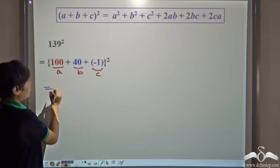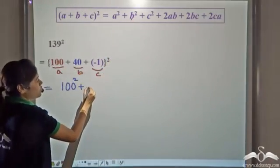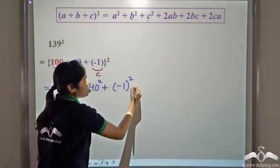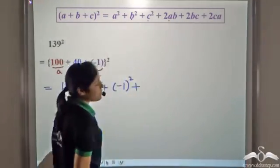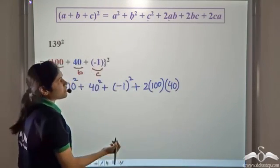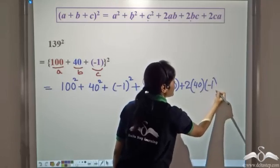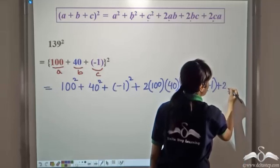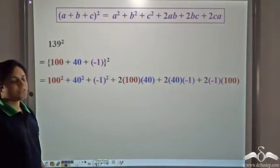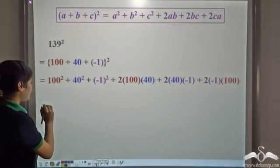So when we expand it, we have a² so we write 100², b² so we write 40², c² so we write (negative 1)², then 2ab so we write 2 times 100 times 40, then 2bc so we write 2 times 40 times negative 1, and 2ca so we write 2 times negative 1 times 100. So we have a² plus b² plus c² plus 2ab plus 2bc plus 2ca.